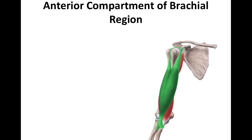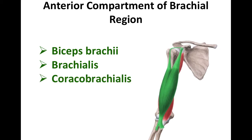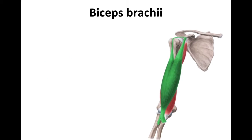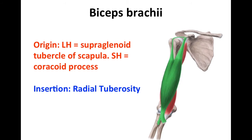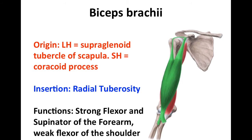These consist of the BBC: biceps brachii, brachialis, and coracobrachialis. We're going to take a look at biceps brachii first. This muscle consists of two heads, a long head and a short head. The long head originates from the supraglenoid tubercle of the scapula, while the short head originates from the coracoid process. They both insert on the radial tuberosity, and their function is that they're strong flexors and supinators of the forearm. However, they're weak flexors of the shoulder.